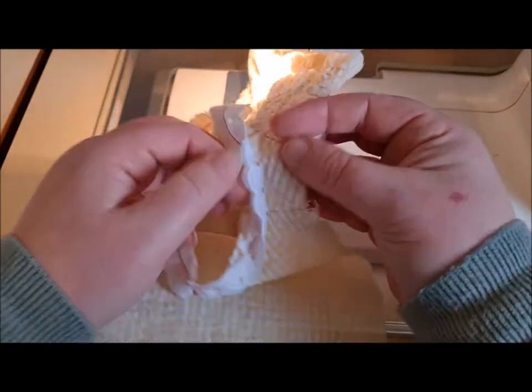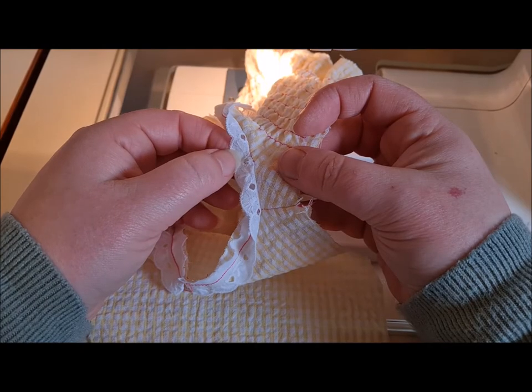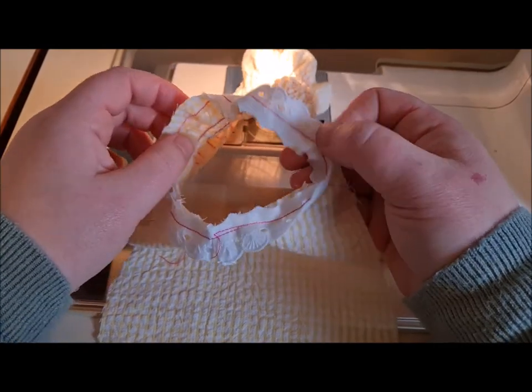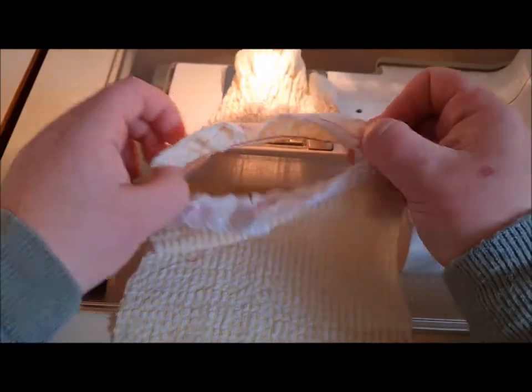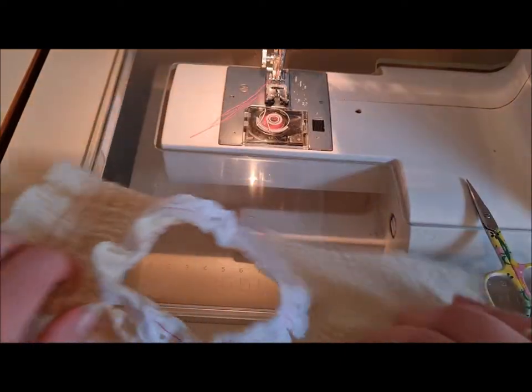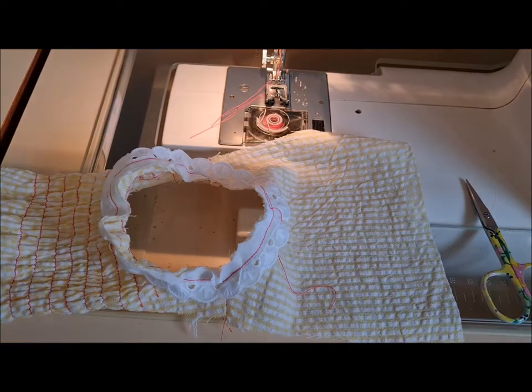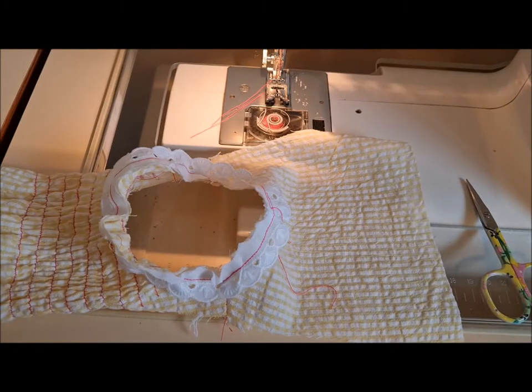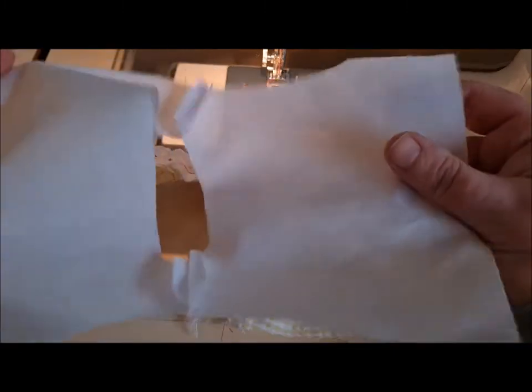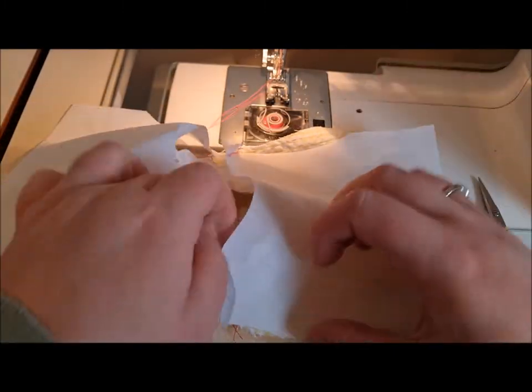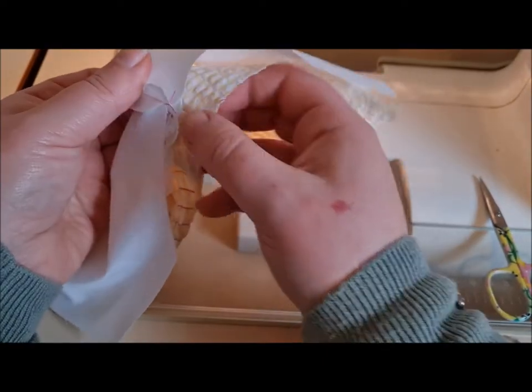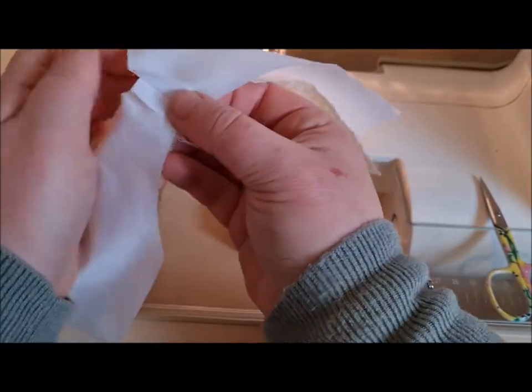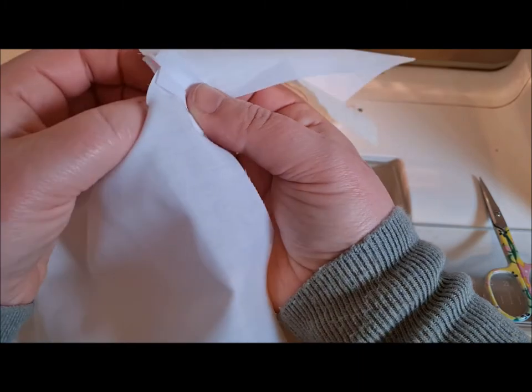We're actually going to put our lining on top, so we want the right sides together of our lining. Here we are, this is the front. The wider one is the front. Just like that, and all we're going to do is match up those side seams there.